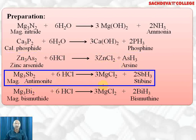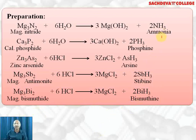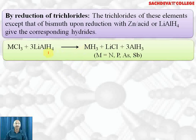Magnesium antimonide reacts with HCl to form magnesium halide and stibine. Magnesium bismuthide reacts with HCl to form magnesium chloride and bismuthine. These days ammonia is called azane, phosphine is called phosphane, arsine is called arsane, stibine is called stibane, and bismuthine is called bismuthane — like methane, ethane, etc. By reduction of trihalides: the trihalides of these elements, except bismuth, upon reduction with zinc and HCl or lithium aluminium hydride, give the corresponding hydride.